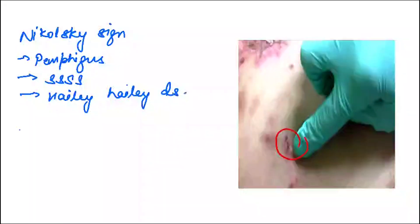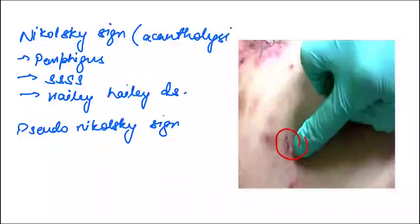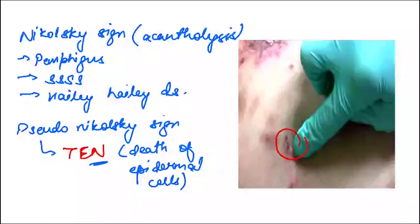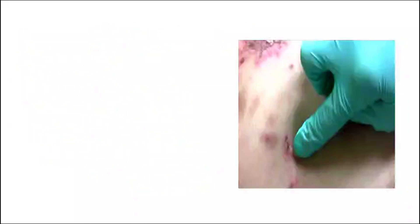Here I will tell you about pseudo-Nikolsky sign. What is the difference? Nikolsky sign is due to acantholysis, which is seen in histopathology. That is true Nikolsky sign. Pseudo-Nikolsky sign is seen in toxic epidermal necrolysis. Here, the shearing off of the epidermis is not due to acantholysis, but rather because of the death of epidermal cells. A quick revision: Nikolsky sign is seen in pemphigus, staphylococcal scalded skin syndrome, and Hailey-Hailey disease. Pseudo-Nikolsky is seen in toxic epidermal necrolysis.